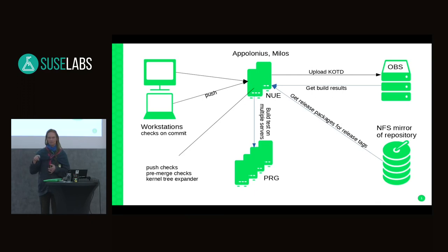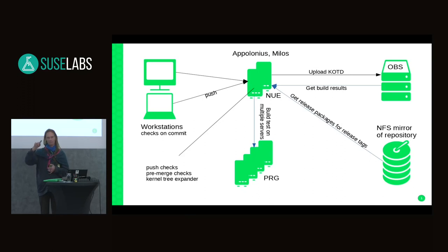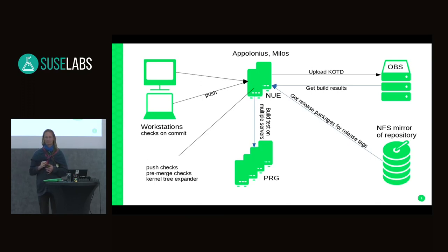The RPMs are downloaded by a service on one of the servers, extracted, and there is a note indicating from which Git revision the RPM was built, and it's stored in the tree. This corresponds to the RPM released to customers.